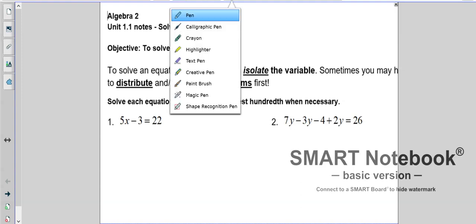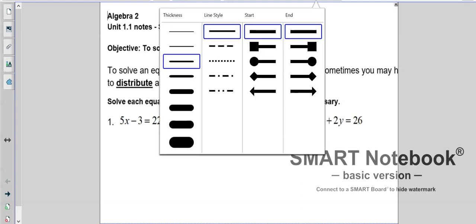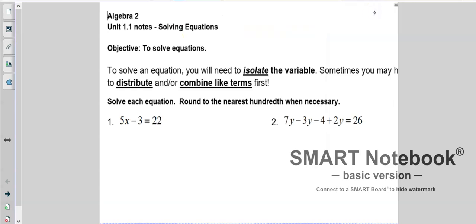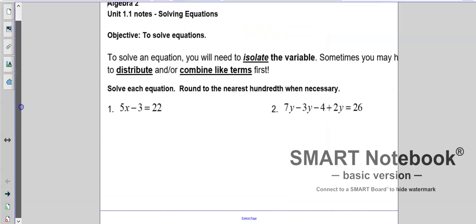Alright, here we go with 1.1. Section 1.1, solving equations. To solve an equation, you need to isolate, which means to get alone, the variable. Sometimes you may have to distribute or combine like items first.